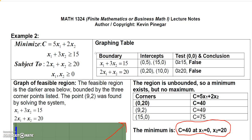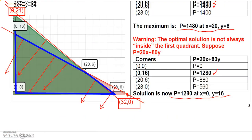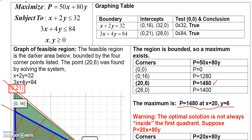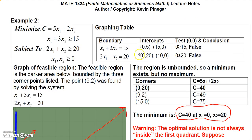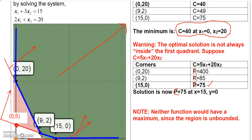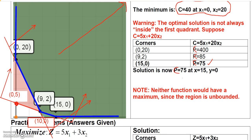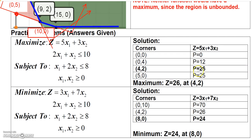These two problems are a specific type we'll learn to solve later in the chapter. The first problem — maximizing with all constraints less than or equal to — is called a standard maximization problem. The second — minimizing with all constraints greater than or equal to — is a standard minimization problem. A couple more practice problems are included below, with corner points and optimal solutions provided.